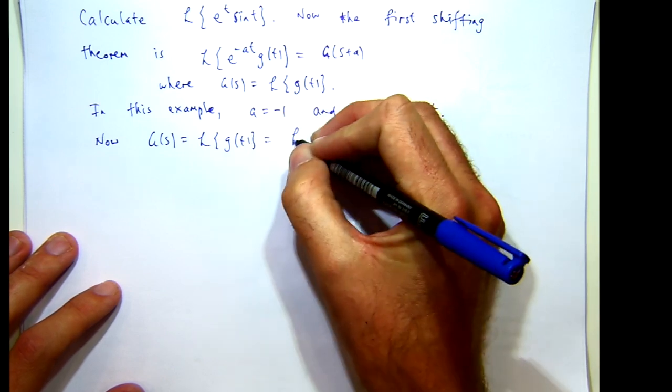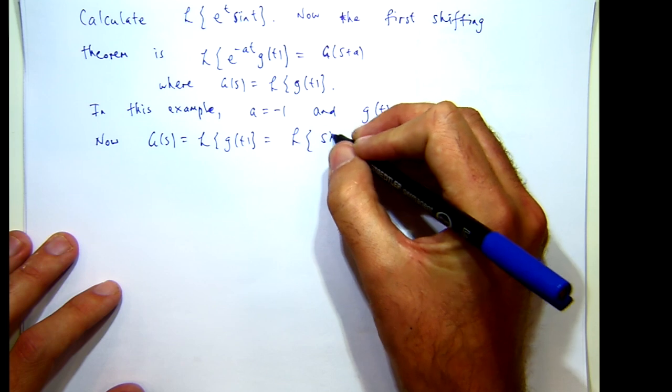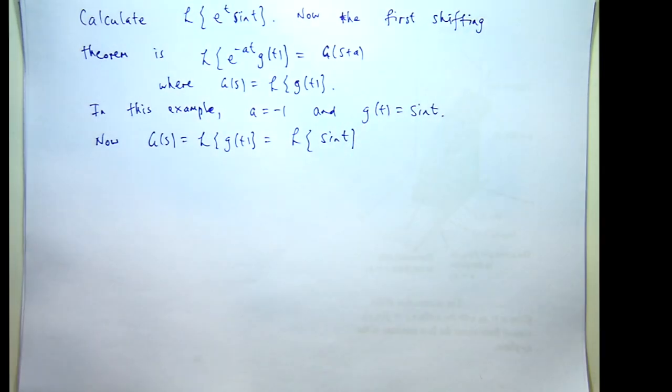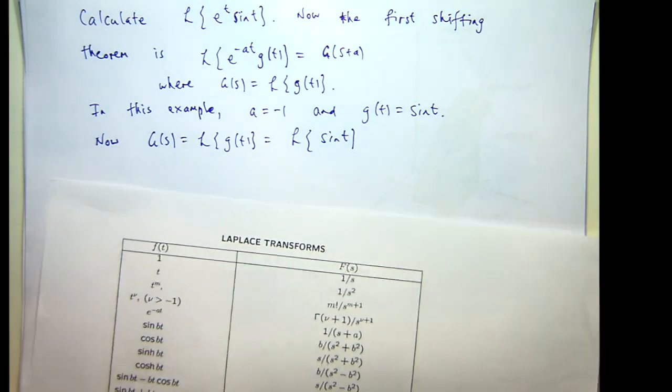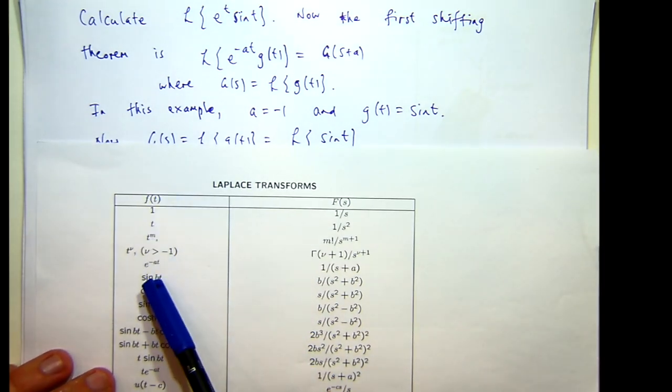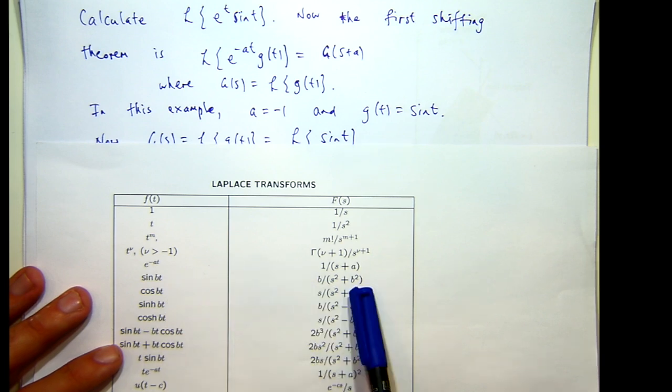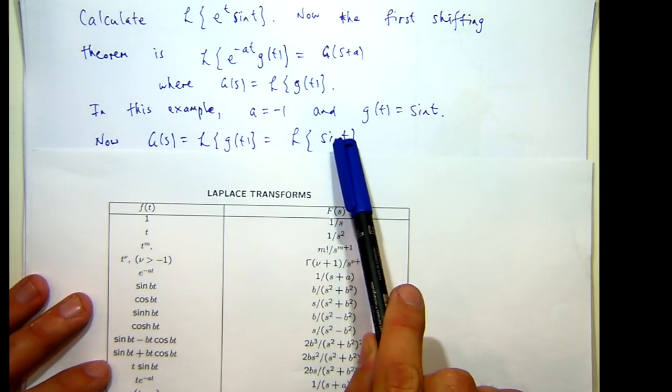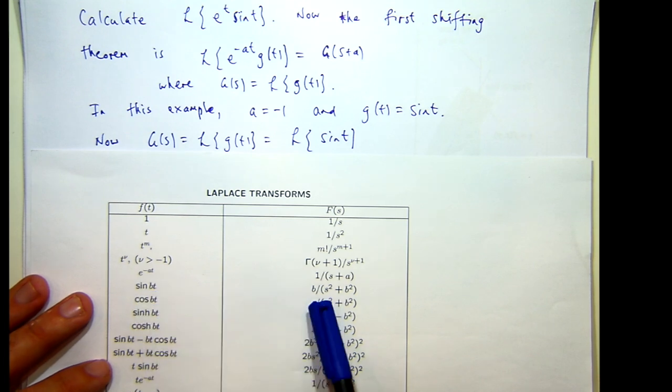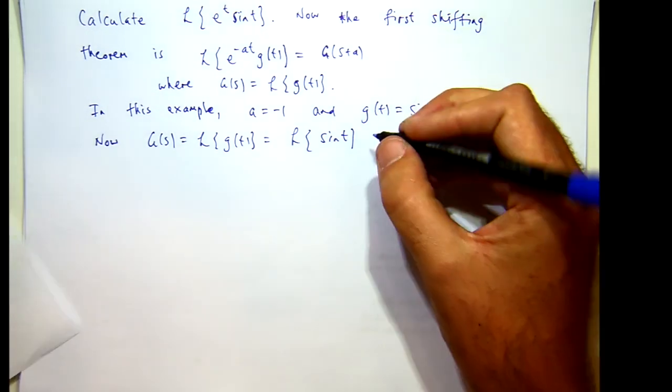So in our example we want to calculate the Laplace transform of sin(t). If we look down the table on the left hand side we get down to sine, b's a constant in this context, we look across there's the transform so for our particular situation we want b equals one so the Laplace transform of sin(t) from the table is 1/(s^2 + 1).